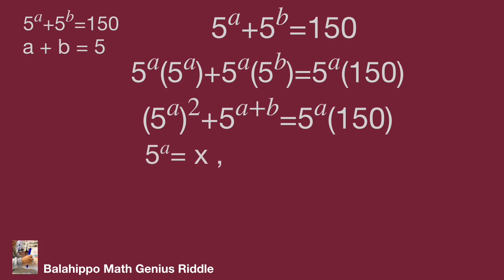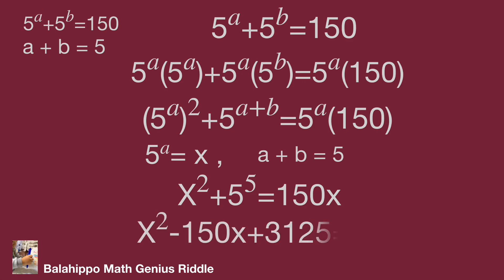We define 5 power of a is x, then substitute a plus b by 5. Regenerate the new equation, it becomes x squared plus 5 power of 5 equal to 150x. Move 150x to the left side.